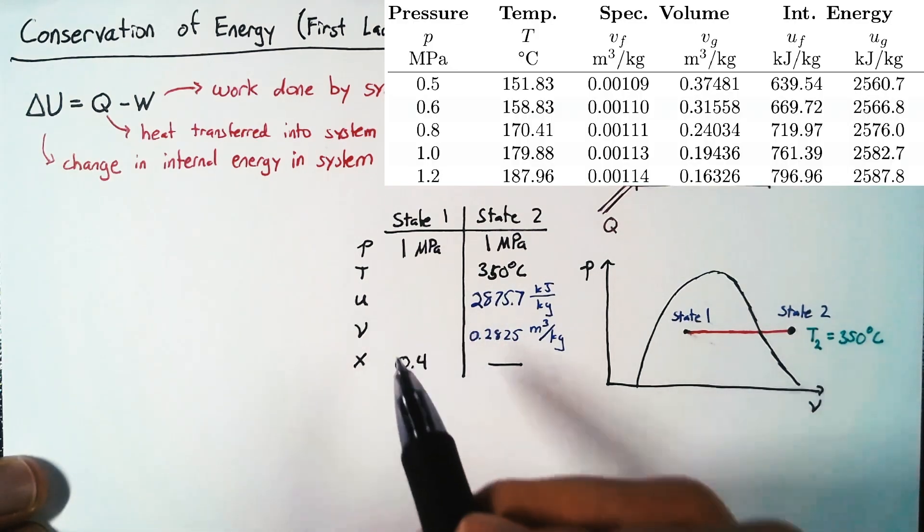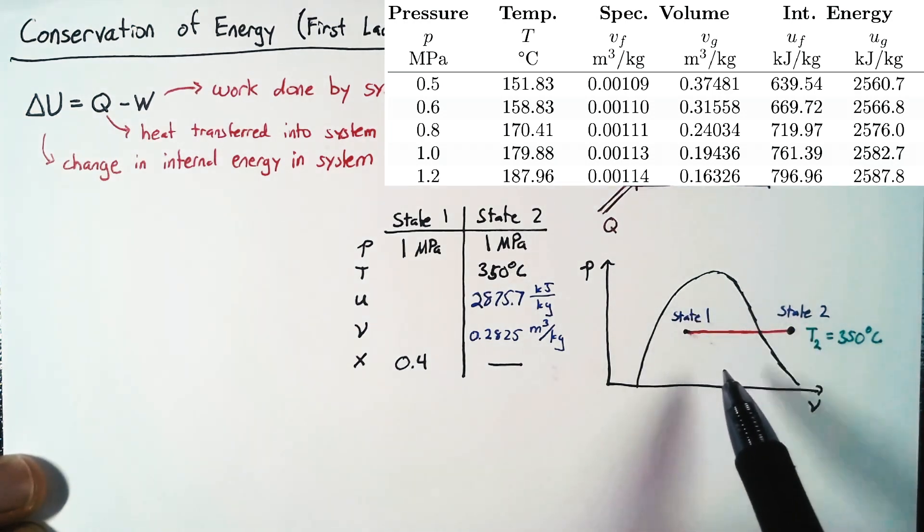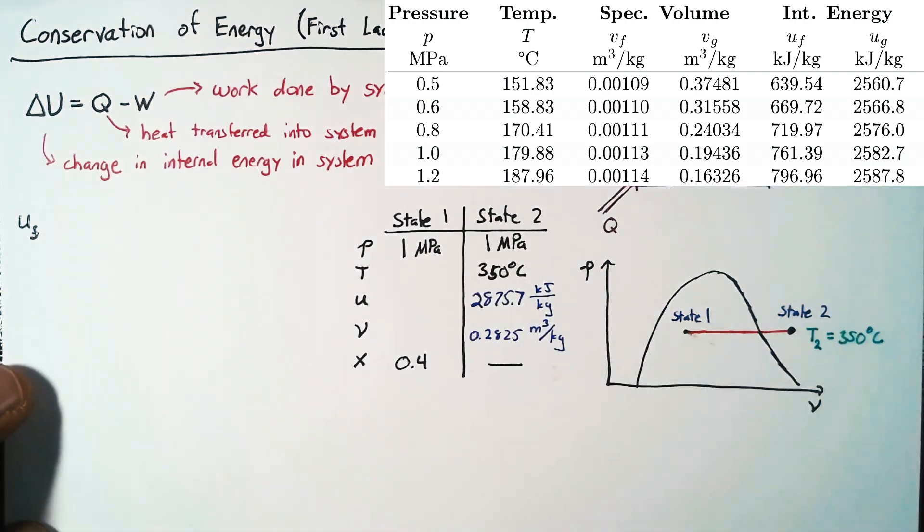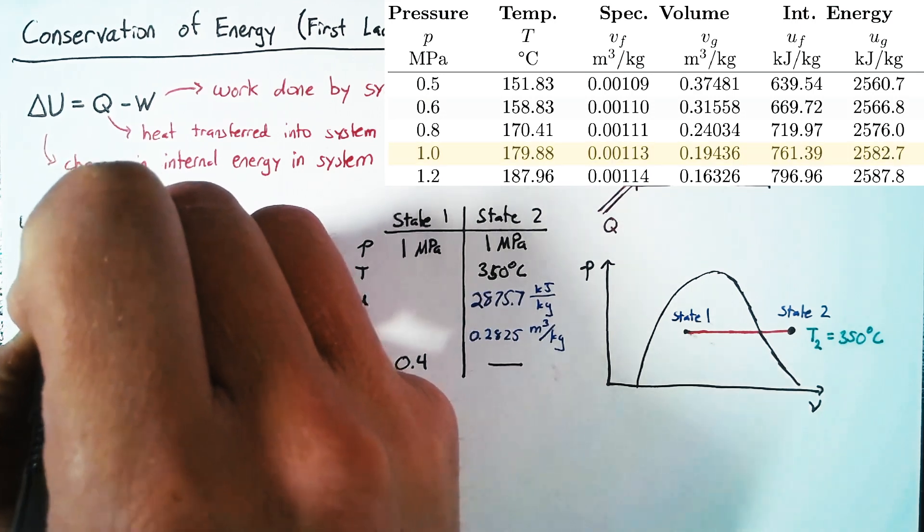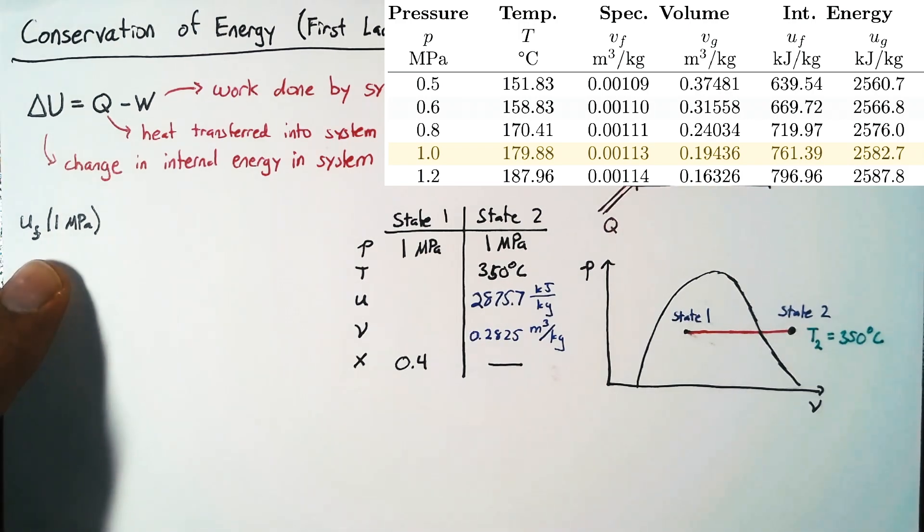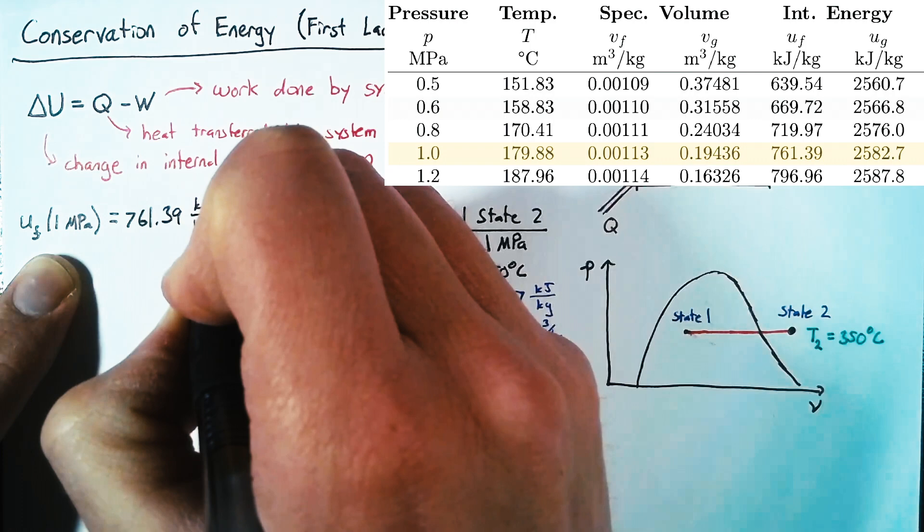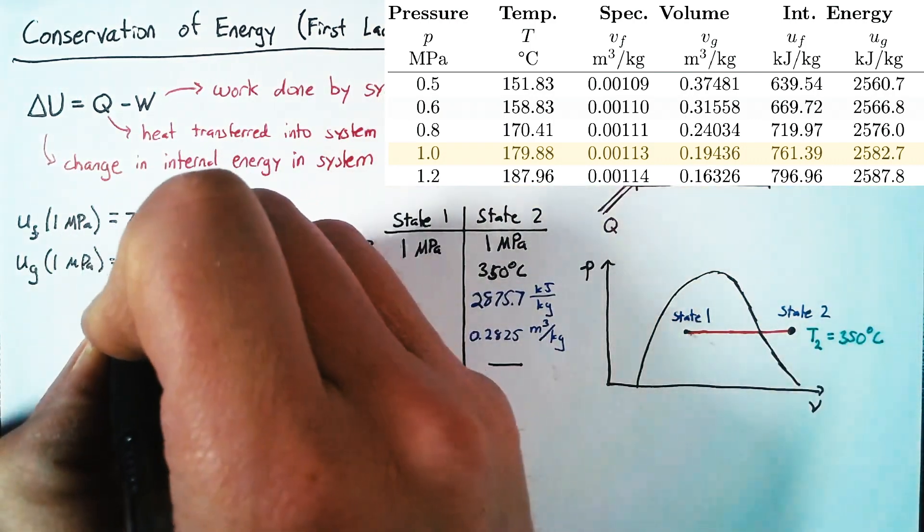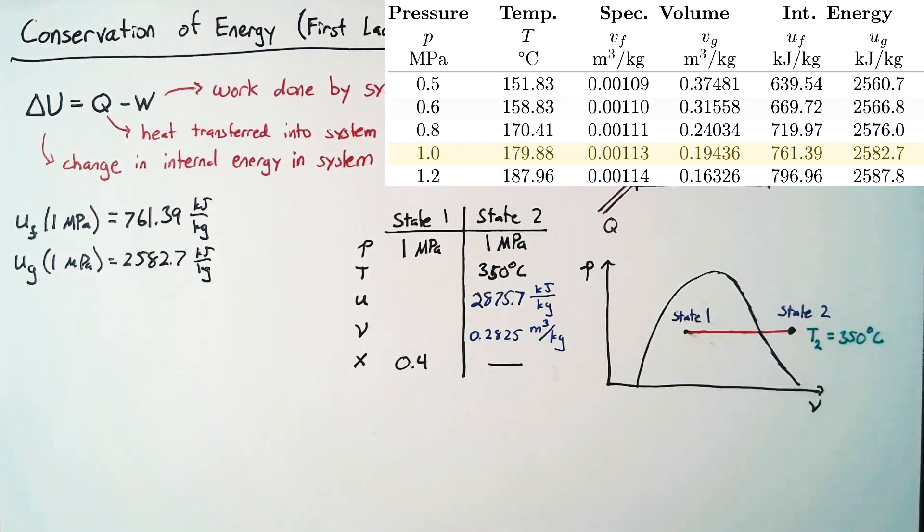Now, for state 1, we need to do a little bit more work. We can go to the saturated tables, because we know that we're inside this saturated region. And so from there, we can say that the specific internal energy at 1 megapascal for a saturated fluid is 761.39 kilojoules per kilogram. Then we can find the same for the gas. And this one is 2582.7 kilojoules per kilogram.